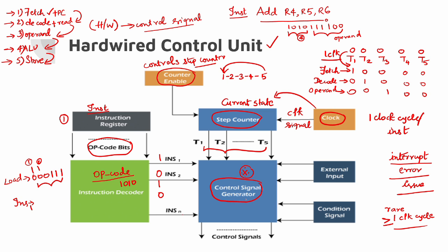The inputs to the control signal generator come from: the instruction decoder, the step counter, the external input, and the condition signal. The condition signal checks overflow, zero flag, less than or greater than. These are the condition signals. The external input is also an input. Based on these four values, the final control signal output is generated in binary.